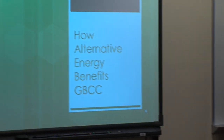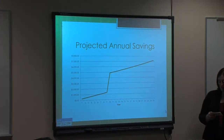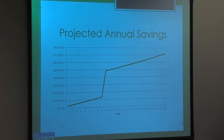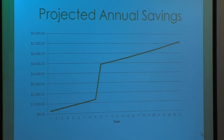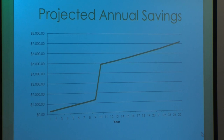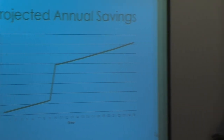Now we will look at how alternative energy benefits Great Bay Community College. This is a graph of the projected annual savings. Per GBCC's power purchase agreement with Revolution Energy, we are paying 14 cents a kilowatt hour, or approximately $4,000 annually for the first nine years. After nine years, GBCC owns the panels and the contract with Revolution Energy ends — which is why you see a huge spike at year nine. Afterwards, the costs are next to nothing for use of the solar panels. We factored in one cent per kilowatt hour for the cost of maintaining the solar panels.